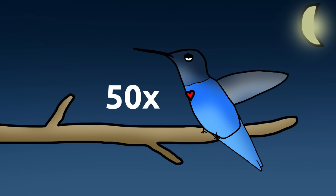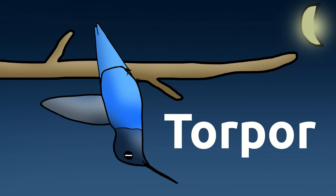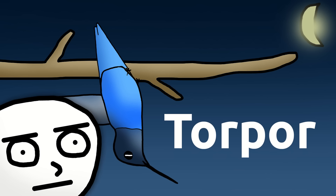But once the party's over, hummingbirds can decrease their heartbeat all the way down to a moderate 50. This is present during the hummingbird's equivalent of sleep, aka torpor. During torpor, they are so still you'd think they were a body from Pompeii.